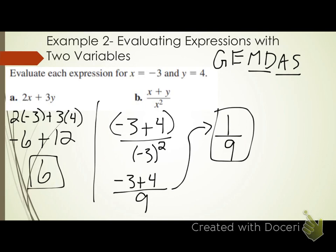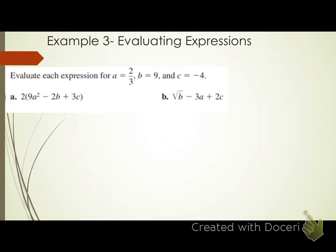Any questions on B? The first example had one variable, this example had two variables — how many variables do you think we're going to have now? Three, and one of them equals a fraction. Fractions are just numbers. Evaluate each expression for A equals two-thirds, B equals 9, and C equals negative 4. The process isn't going to change — plug in and use order of operations.